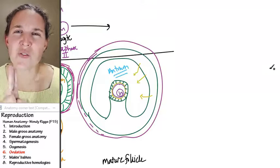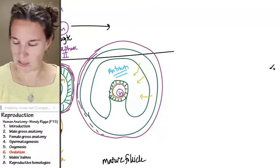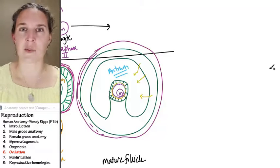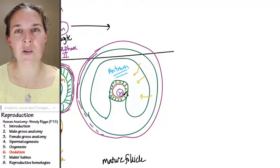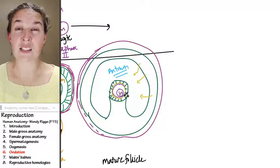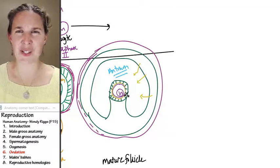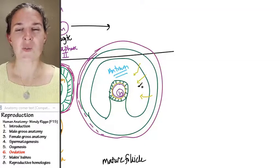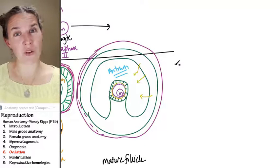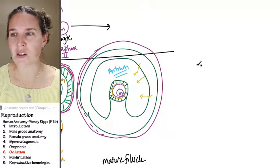So there are two things that we need to keep track of. First of all, we need to keep track of this secondary oocyte, because only if it gets fertilized is it going to finish meiosis and actually be an ovum. Only if it's fertilized. So we got to keep track of that and whether or not we get fertilized. But we also have to keep track of this mature follicle.